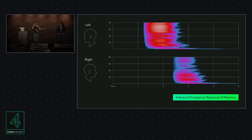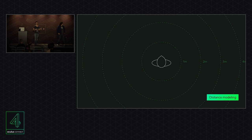So all three of these cues — level difference, time difference, and spectral difference — come together to give you that sense of direction. You can put a sound anywhere: up, down, below, left, right. But you need to push it away into the distance to really create that full 3D scene. So I'm going to talk about some of the distance cues used in the current state of spatial audio. The first and most notable one is attenuation — sounds get quieter as they get further away from the listener.